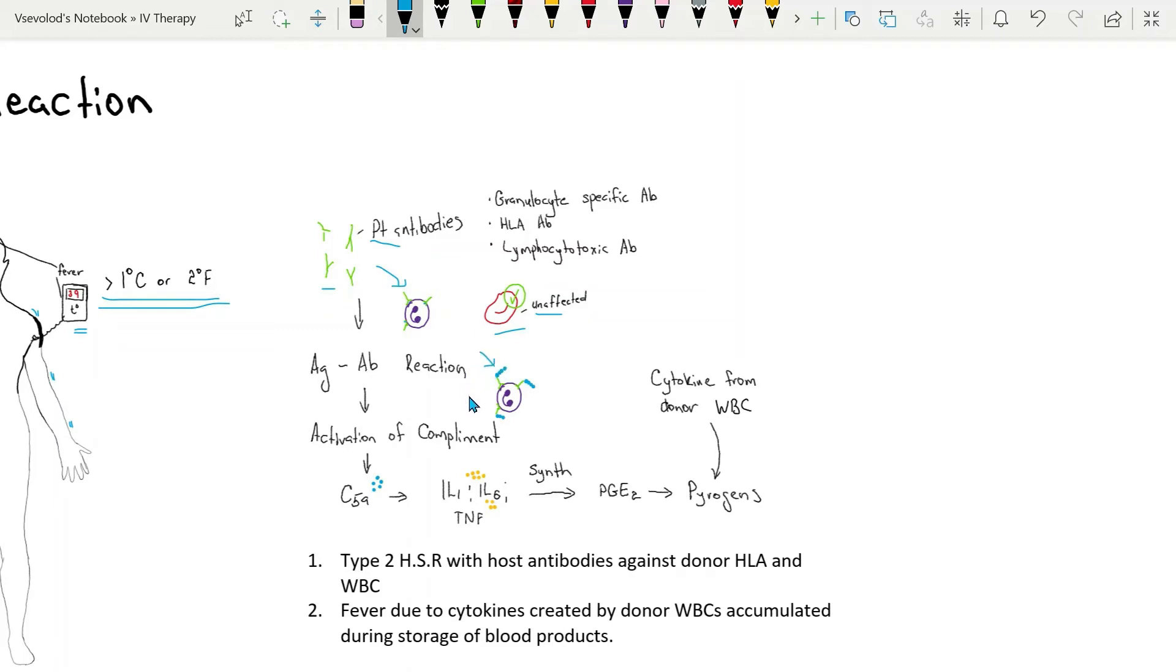And other cells will be activated releasing interleukin-1, interleukin-6, tumor necrosis factor, and prostaglandins which in turn will release other cytokines from the donor such as pyrogens. Pyrogens will stimulate hypothalamic nucleus to increase metabolism and raise patients' temperature.